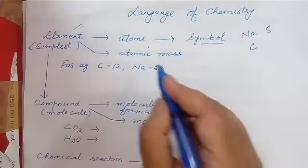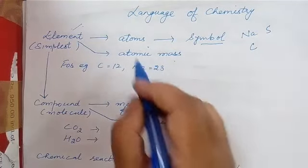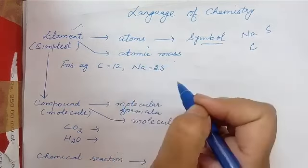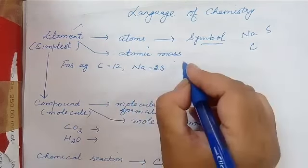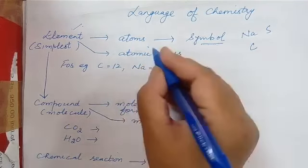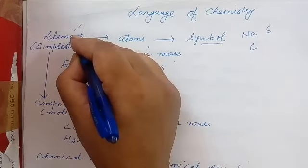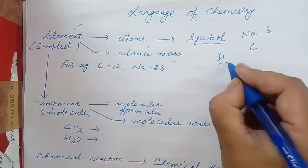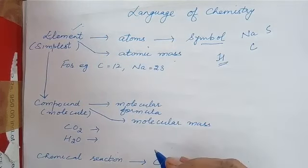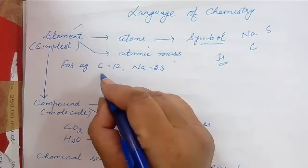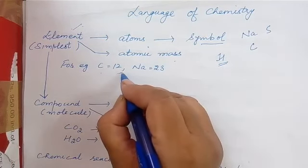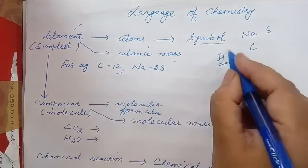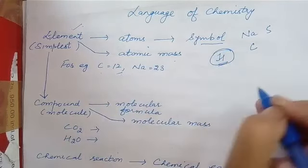Now all elements have atomic masses. Why? Because they are made up of atoms and atoms have atomic masses. What is atomic mass? It is the mass of one atom of an element — specifically, how much heavier it is than one atom of hydrogen. For example, carbon's atomic mass is 12, meaning carbon is 12 times heavier than one atom of hydrogen.